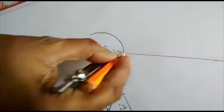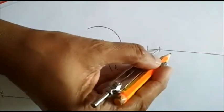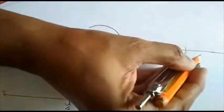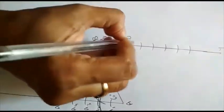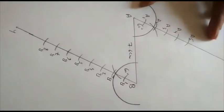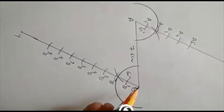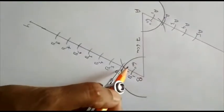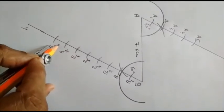In the same way, from point B with the same radius, I draw 8 equal arcs: B1, B2, B3, B4, B5, B6, B7, and B8. I have drawn 8 equal arcs.